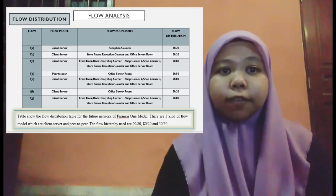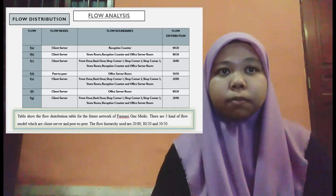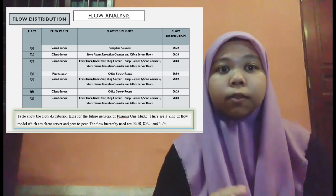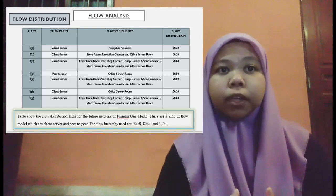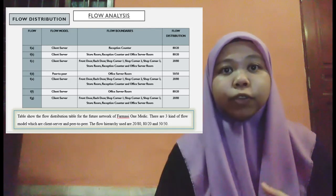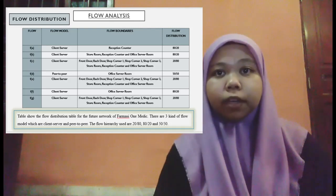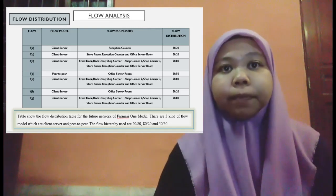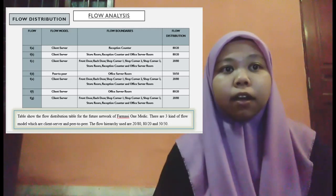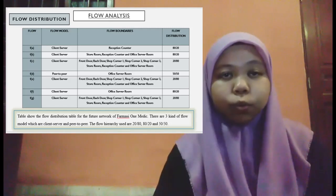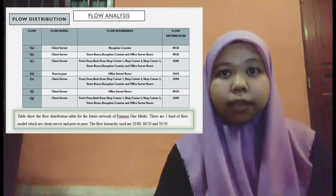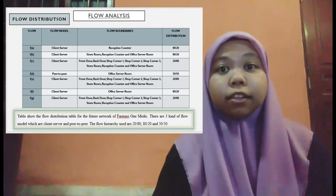Flow E uses the client-server model, with boundaries from front door through to office server room, and a flow distribution of 20/80. Flow F is client-server with the flow boundary at office server room and an 80/20 flow distribution.